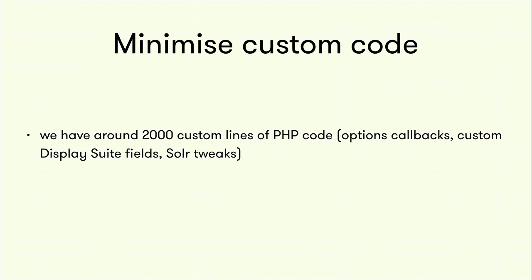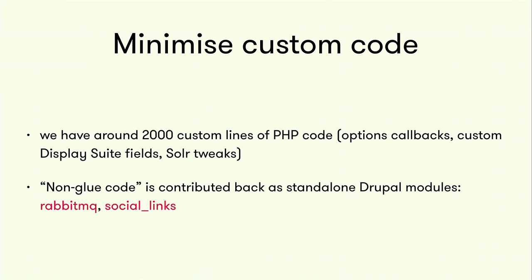We went through our current code base as a kind of test and found just around 2,000 custom PHP lines in our distribution. These PHP lines were relating to option callbacks, custom display fields, and Twig tweaks — all the kind of things you would call glue code when you do a Drupal project. All the non-glue code, on the other hand, we tried to contribute back to a specific module. We needed a really good reason to write glue code, because if you could refactor it into a contributed module, that's the way forward — then you can plug into the community to help maintain that code.